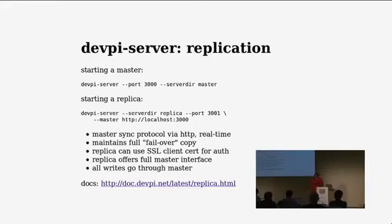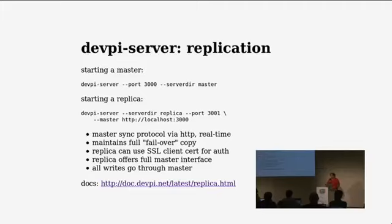This replication works by HTTP between replica and master and maintains a full failover copy. When you upload something to the master, you can also upload to the replica — it has the full interface, and that upload will only complete if the package is also at the master. So at any point when you upload something, you have it on at least two hosts. All writes go through the master — it's a simplified replication model that seems to work quite well.